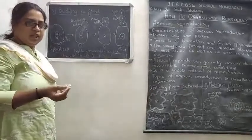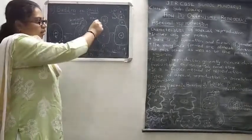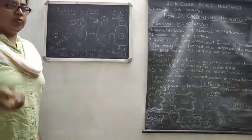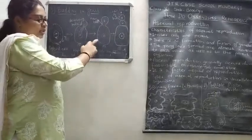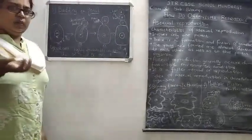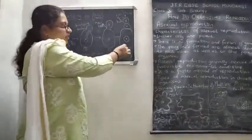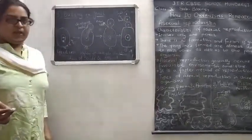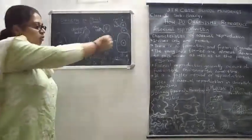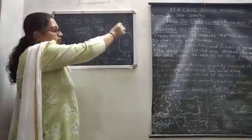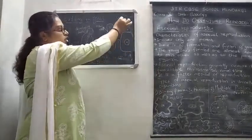Once the bud receives all the nutrition and cell contents from the parent cell, it gets separated from the parent yeast cell and grows as a new yeast organism — a newly formed individual. This happens during favorable conditions, with proper supply of water, nutrients, and temperature. If conditions are not favorable, the yeast cell continuously divides forming a chain of buds.